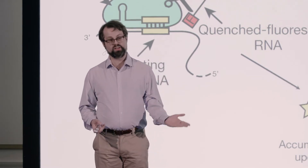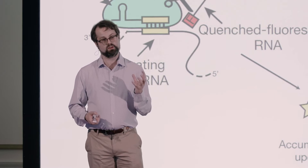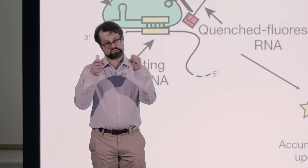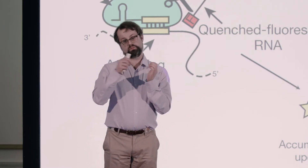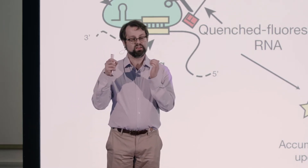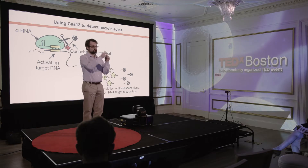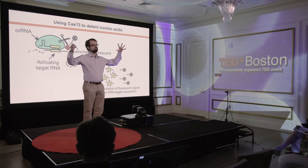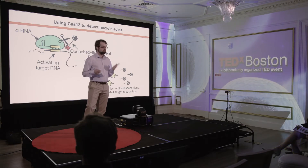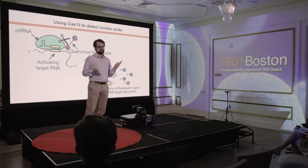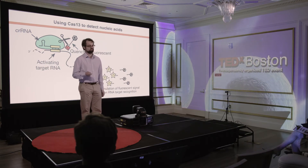we're able to read out Cas13's cleavage activity, because those two moieties are held together by a short piece of RNA that Cas13 can cut. So Cas13 starts cutting, and then boom — the molecule falls apart, and that produces a fluorescent signal that you can detect very easily.